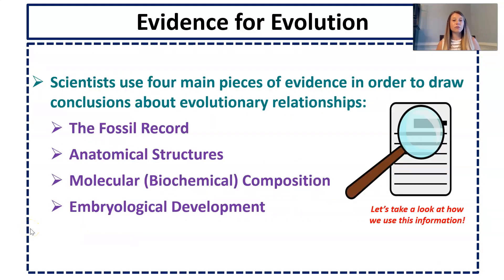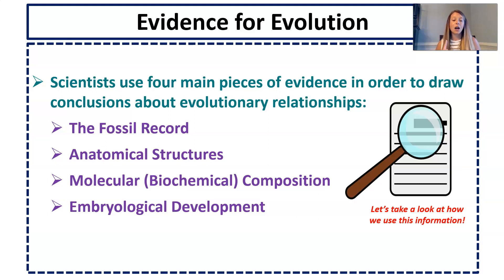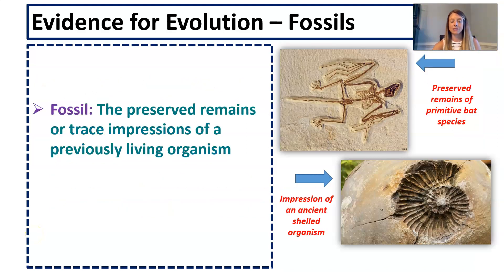Scientists use four main pieces of evidence to draw conclusions about evolutionary relationships. They look at the fossil record, anatomical evidence, molecular or biochemical composition, and the development of embryos. We're going to break each one of these down.